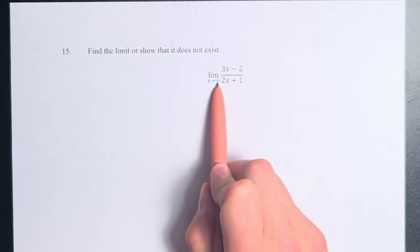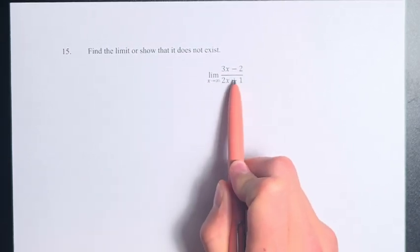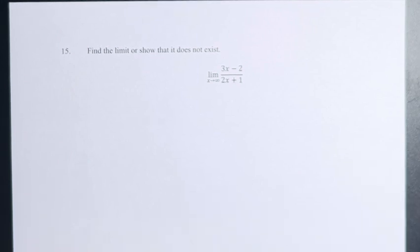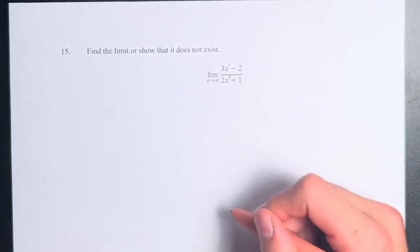You have the limit as x approaches infinity of 3x minus 2 over 2x plus 1. We have a rational function, so we take the largest degree in the numerator and the denominator of the variable. So that's just x to the first power right here.